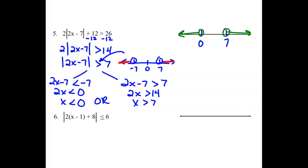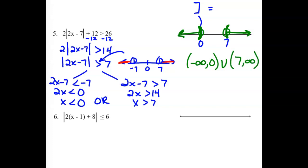Using interval notation, we use rounded brackets since the endpoints are not included. Our solution would be negative infinity to 0, not including that point, union everything above 7 going up to infinity.